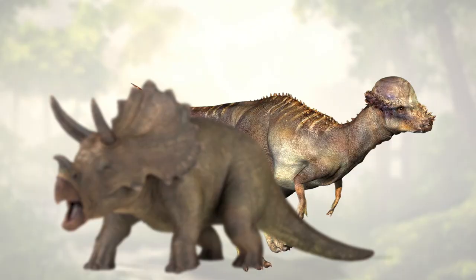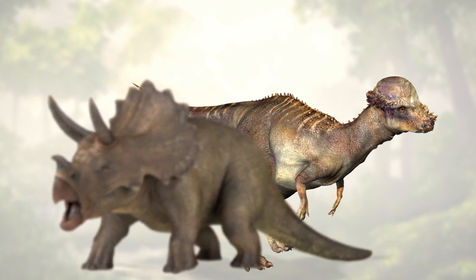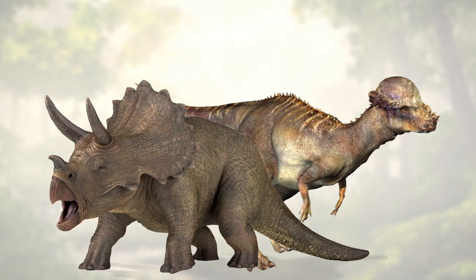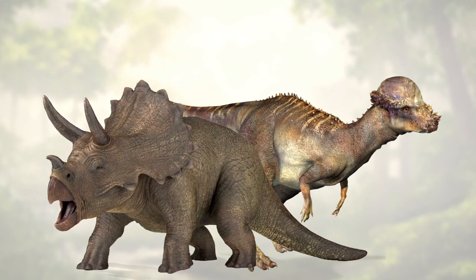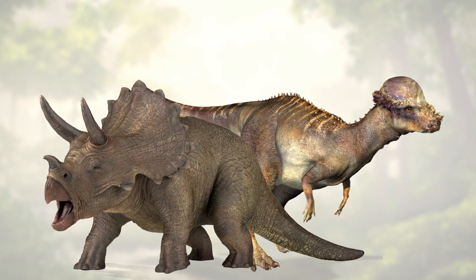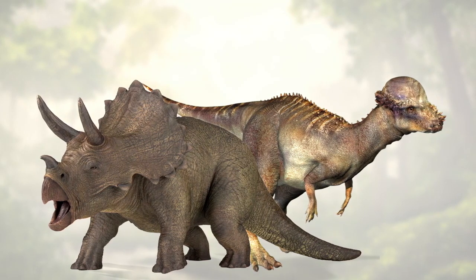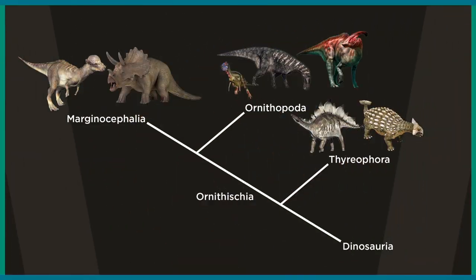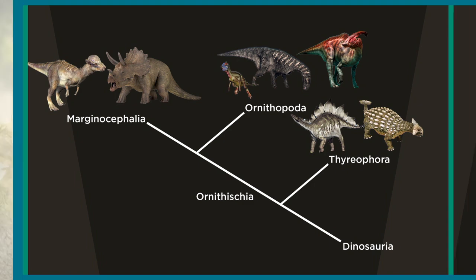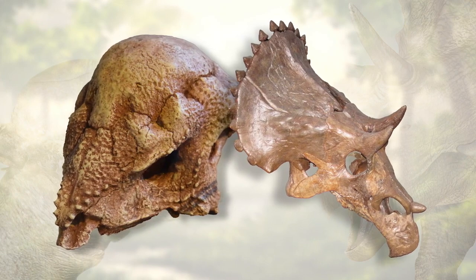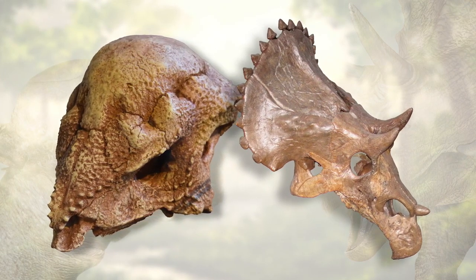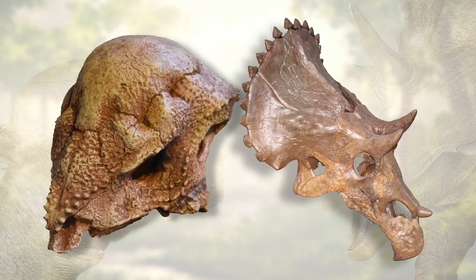The final group of Ornithischians is also all about the headgear. The Pachycephalosauria — those dome-headed bipeds — and the horned and frilled Ceratopsia are more closely related to one another than they are to any other dinosaur group. This is reflected in their conjoined group name, Marginocephalia. While Hadrosaurs elaborate the nose and forehead bones to build their headgear, Marginocephalians instead elaborate the back part of their skulls by building a shelf-like projection. That's where the name Marginocephalia comes from — it translates to 'ridged-headed.'